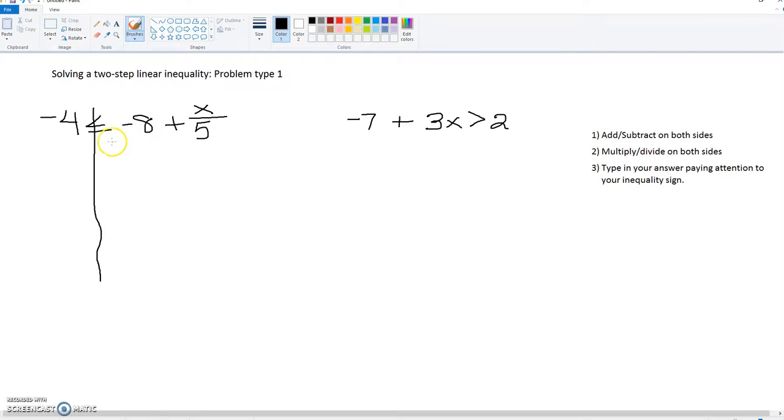Step one is to add or subtract our number. And remember, our goal is always to get x by itself. So in this case, we've got a negative 8, which means we're going to add 8. And we have to do this to both sides.